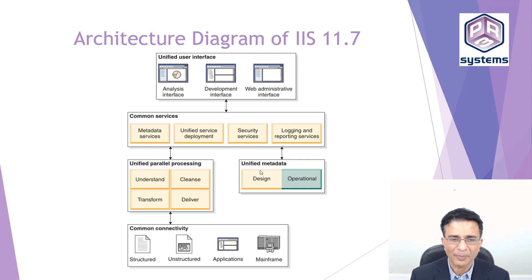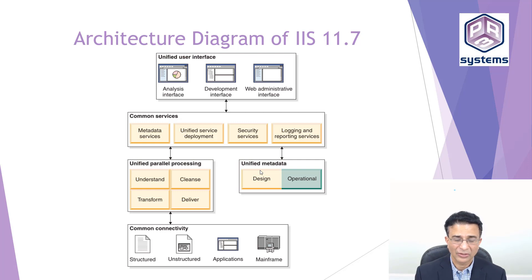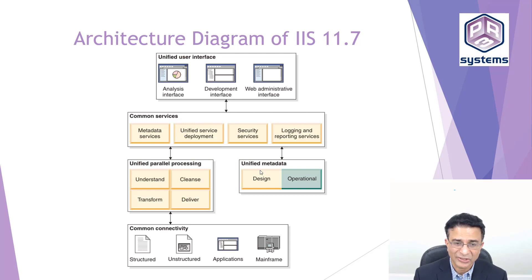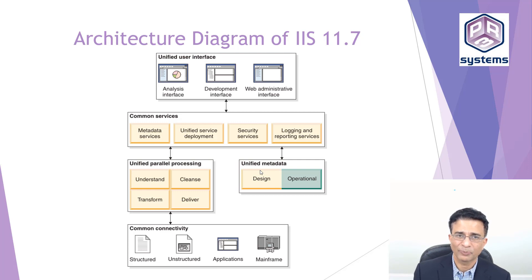We also have common connectivity with all sorts of different data sources. You can connect to any kind of database or file, to mainframe VSAM files, to applications like SAP, and to unstructured data sources as well. So this is the architecture diagram of Information Server 11.7.